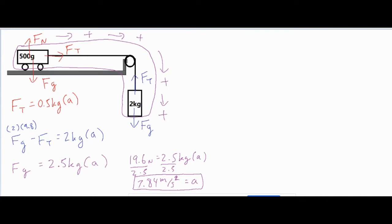So I went ahead and solve for my acceleration. I got 7.84 meters per second squared, which is pretty large for this kind of setup. But we do have a two kilogram mass hanging off the edge. So that acceleration is going to be pretty large. So we found our acceleration.